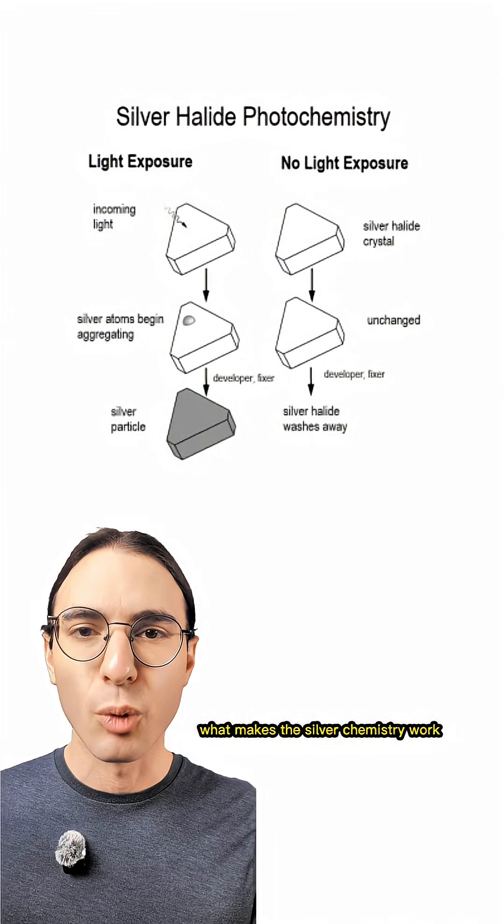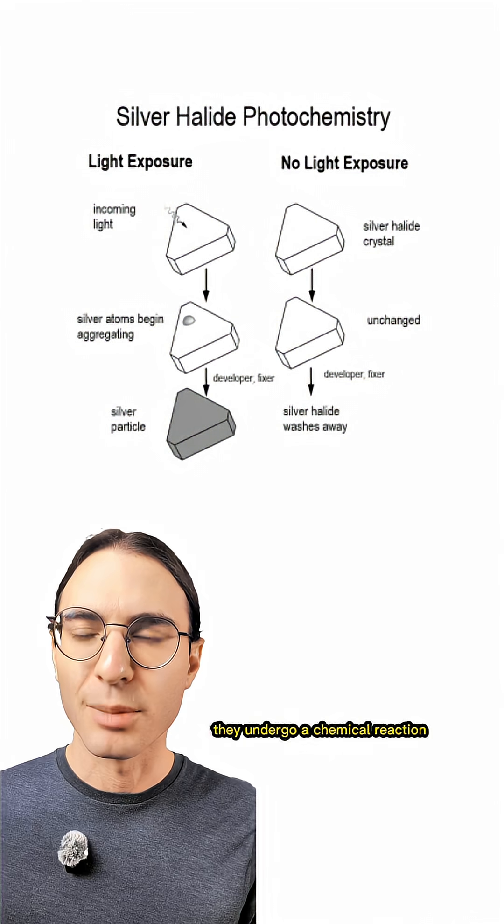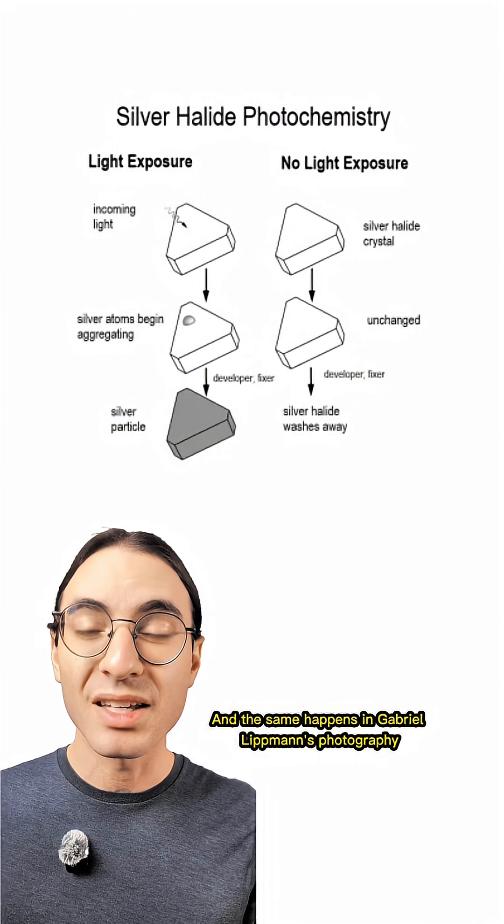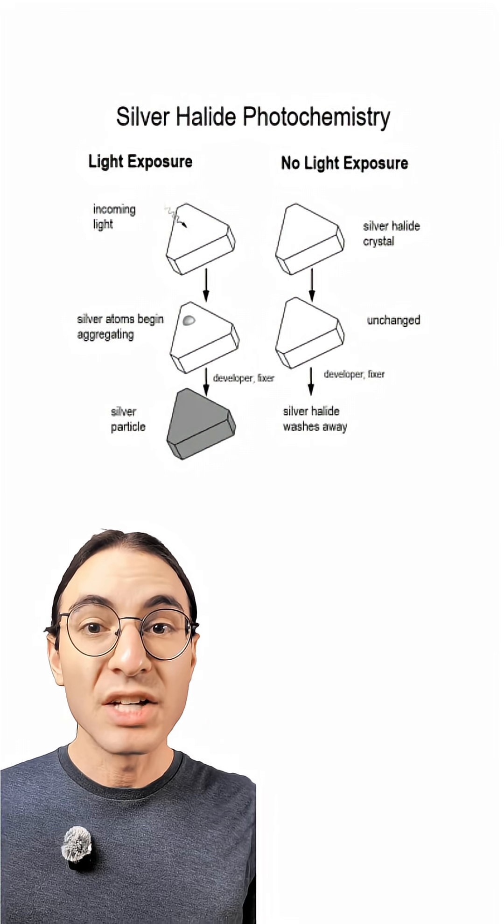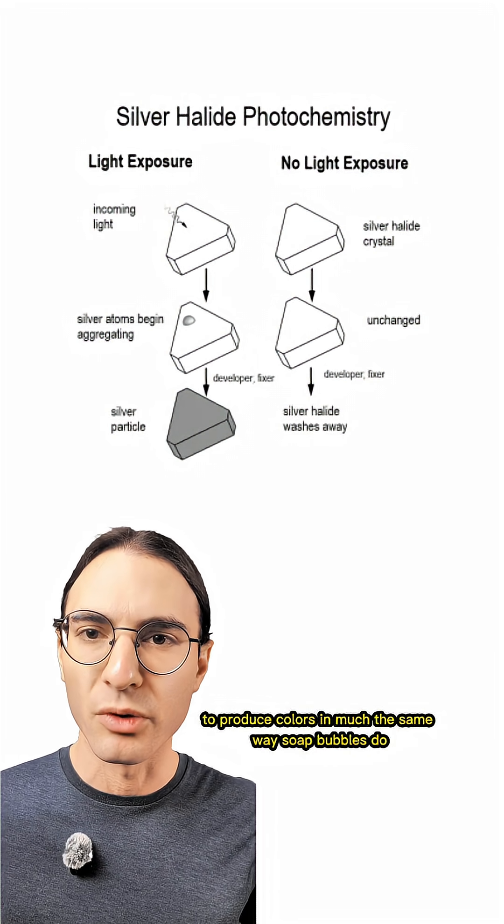Now what makes the silver chemistry work is that when light hits the silver halide particles, they undergo a chemical reaction that produces tiny bits of metallic silver. And the same happens in Gabriel Lippmann's photography. It just uses the physics of interference to produce colors in much the same way soap bubbles do.